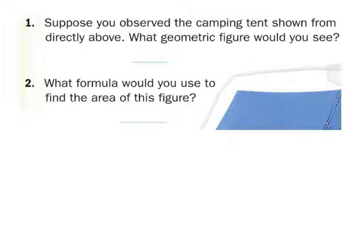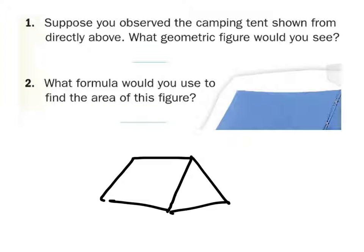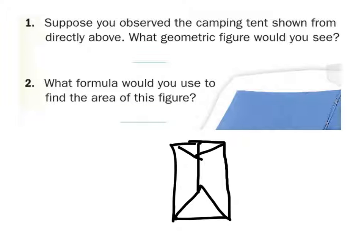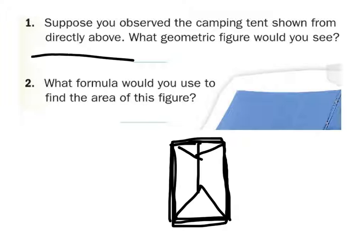This one doesn't have a picture of the tent from above, but if we were to look at this triangular tent from above, you'd still see something like this — the outside is a rectangle. So you would see a rectangle on number one and number two. The formula to find the area of a rectangle is just length times width.